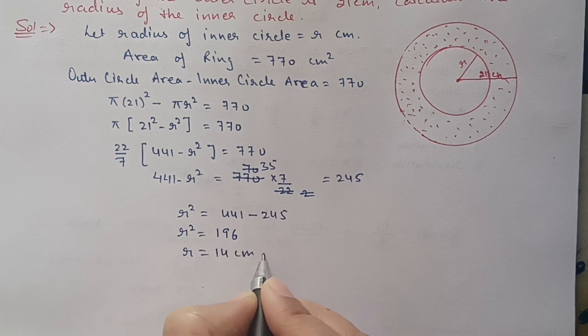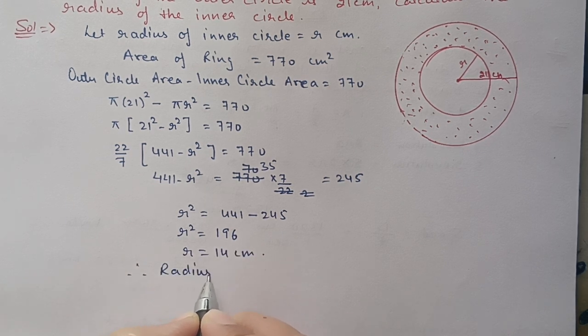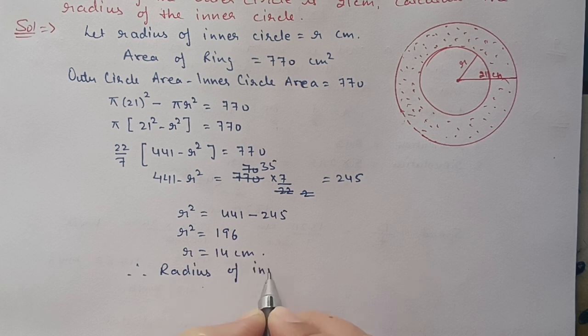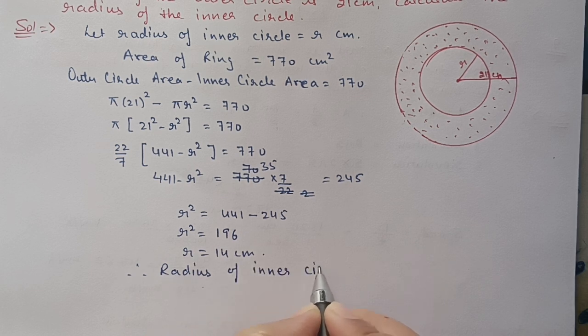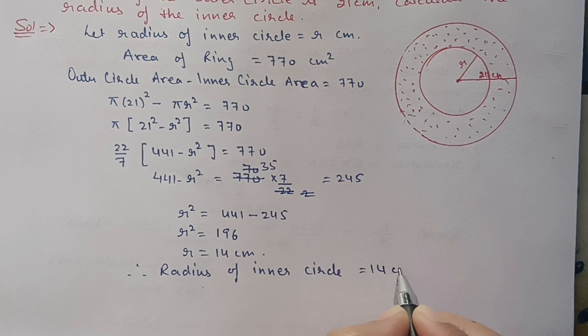Therefore, the radius of the inner circle is equal to 14 centimeters.